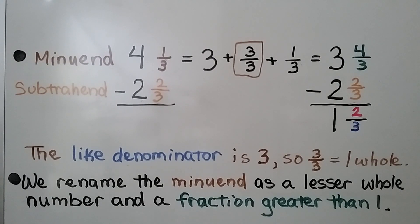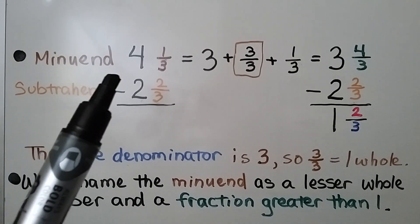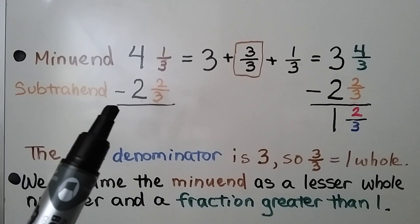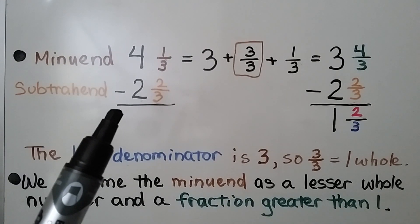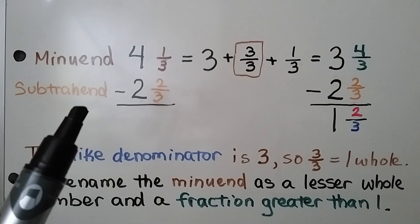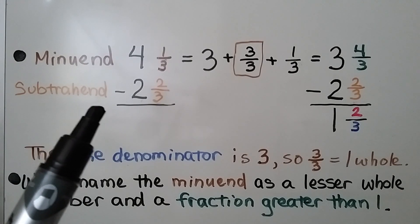Remember, in a subtraction problem the first number is the minuend, and the one we're taking away is the subtrahend. We have 4 and one-third minus 2 and two-thirds.